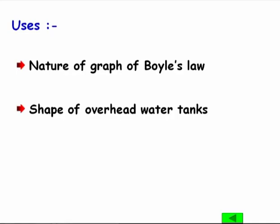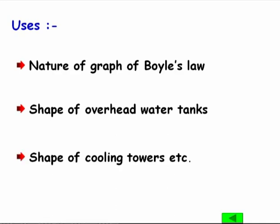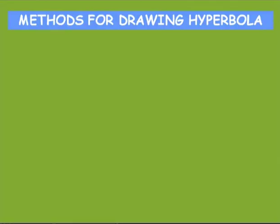Uses of hyperbola: Boyle's law — as you have learned at school level, P is inversely proportional to V, so if we draw the graph of Boyle's law we get a hyperbolic shape. The shape of an overhead tank is a hyperbola, and the shape of a cooling tower in industry is also a hyperbolic section.